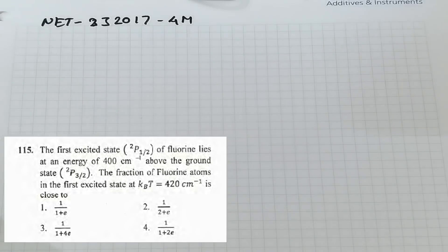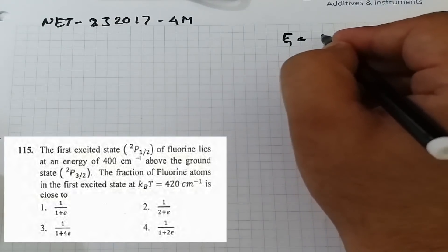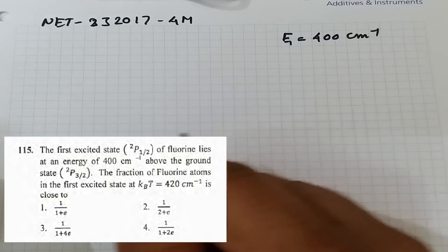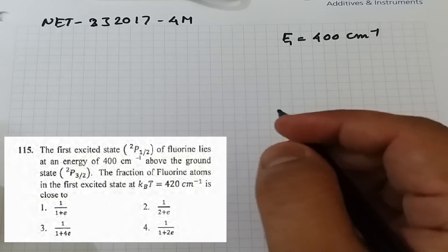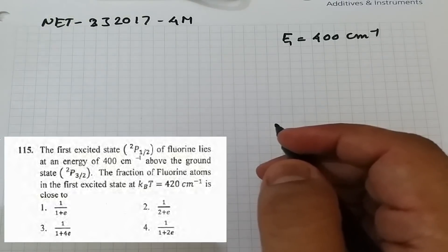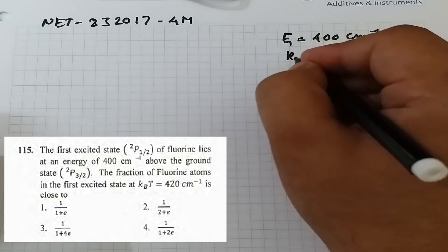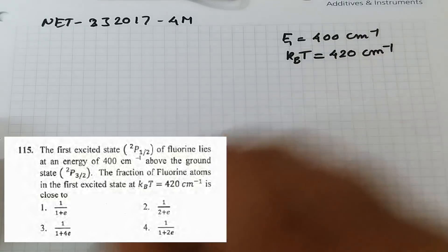The numerical says: the first excited state 2P₁/₂ of fluorine lies at an energy of 400 cm⁻¹ above the ground state 2P₃/₂. The value of k_BT is given as 420 cm⁻¹. We must find the fraction of fluorine atoms in the first excited state.